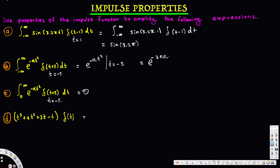For the last expression, there is no integration, so we keep the delta function. The impulse is at t equals zero. We replace all t with zero in the polynomial: 0³ + 4·0² + 3·0 − 6, giving us negative 6. The final answer is −6·delta(t). The delta function remains because there is no integration. That's how we handle this kind of simplification.